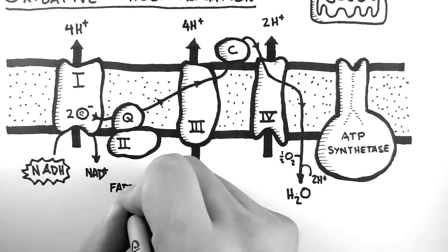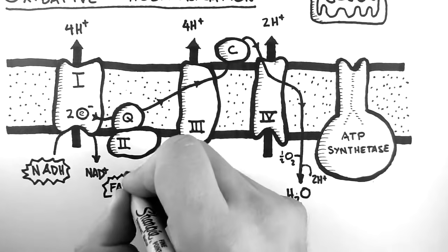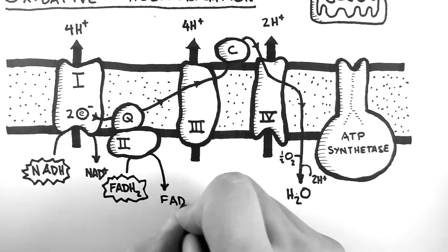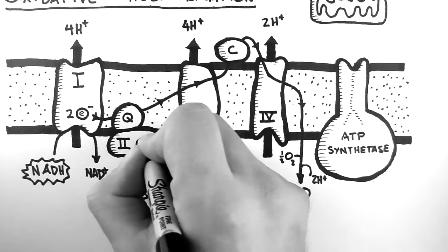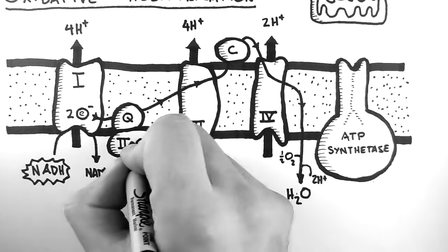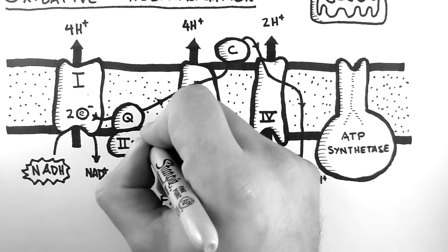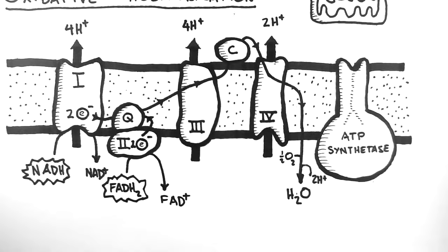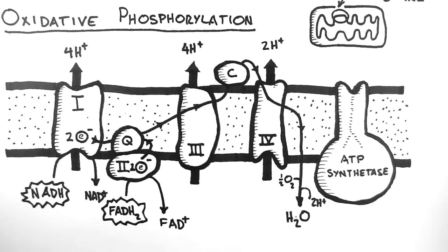A similar process happens when FADH2 is used as the electron donor. Two electrons get donated to complex 2, which in turn passes them to coenzyme Q10 and onward down the electron transport chain. Because complex 1 is not involved when FADH2 is the electron donor, only 6 protons get pumped across the membrane.